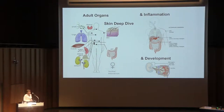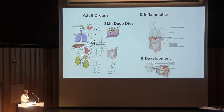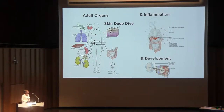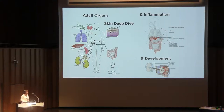The organs we are focusing on are thymus, immune organs, lung, muscle, spleen, adrenal gland, kidney, female reproductive organs, the gut, and then there's the deep dive of the skin. For each of these organs, we are also comparing them to organ development in the developing fetus.